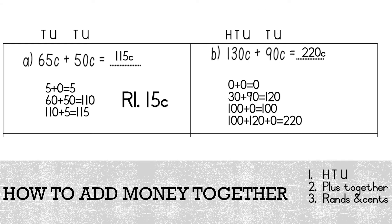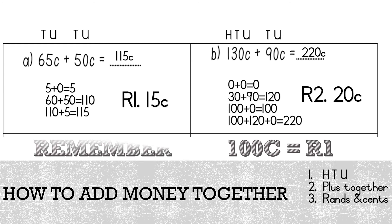Step 3 is our last step — we must divide our rands and cents. How many cents does it take to make 1 rand? It takes 100 cents to make 1 rand. So 220 cents will give us 2 rand 20 cents. It's always important to remember that 100 cents equals 1 rand.